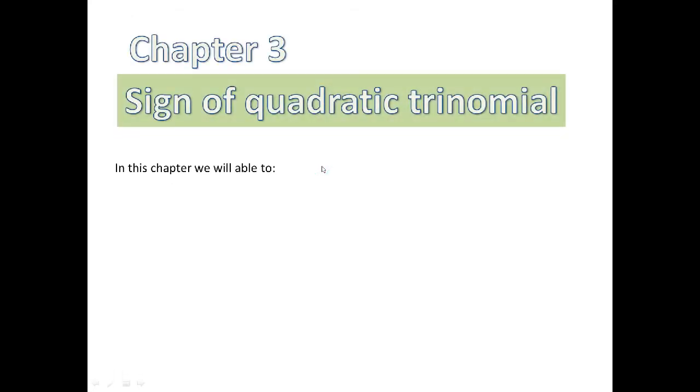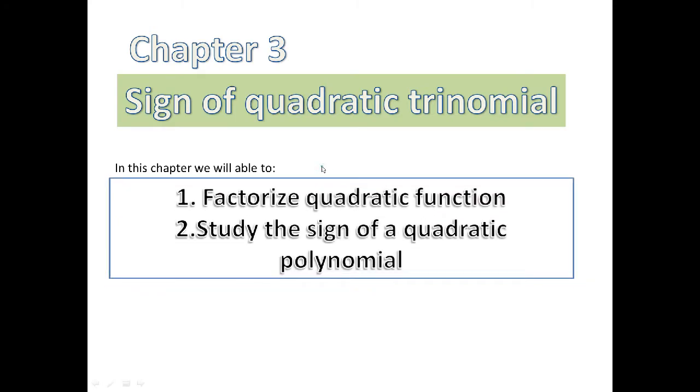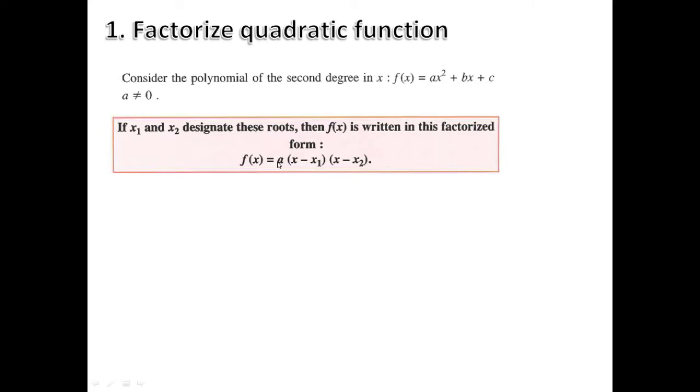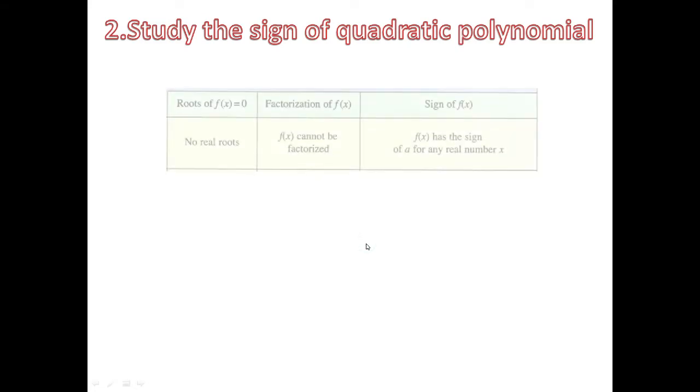In chapter 3, we have studied the sign of quadratic equations. We factorize first the quadratic polynomial, which is in this form. Just get X1 and X2 and then write it in that way.